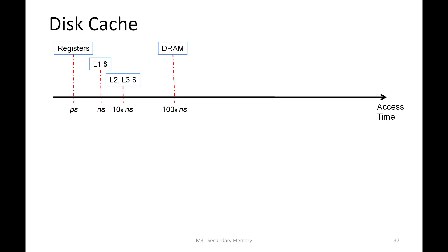Now if we miss DRAM also, it means we would need to access the secondary memory. If the secondary memory is based on flash technology — that's a solid state drive — we would need a few hundreds of microseconds to get the data back to the processor.